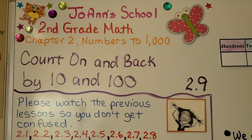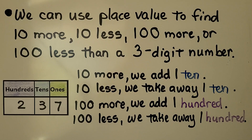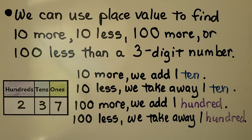Lesson 2.9: Count on and back by 10 and 100. We can use place value to find 10 more, 10 less, 100 more, or 100 less than a three-digit number.